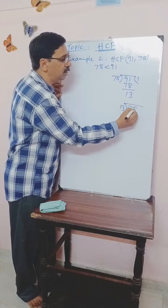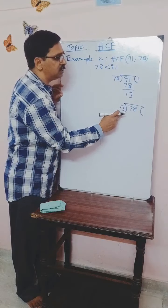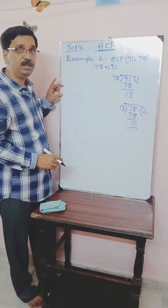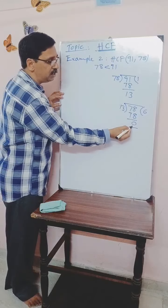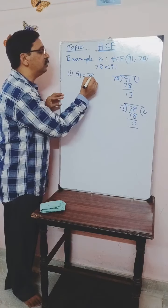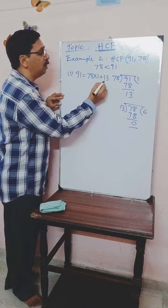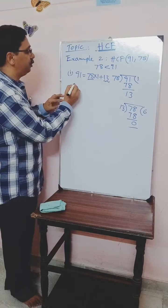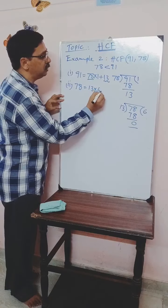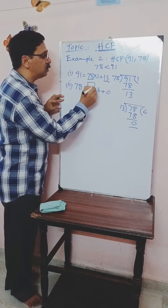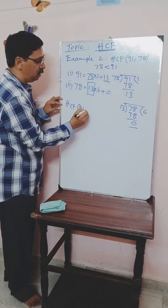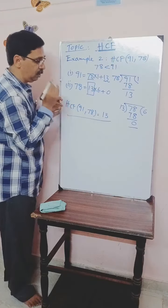So 13 is dividing 78 now. 13 times 6 is 78, and the remainder is 0. Now let us write the division facts. Step 1: 91 = 78 × 1 + 13. Step 2: 78 = 13 × 6 + 0. When the remainder is 0, the divisor so obtained is the HCF of the given numbers. So HCF(91, 78) = 13.